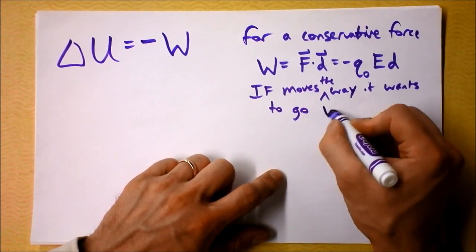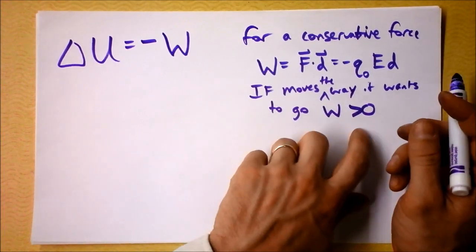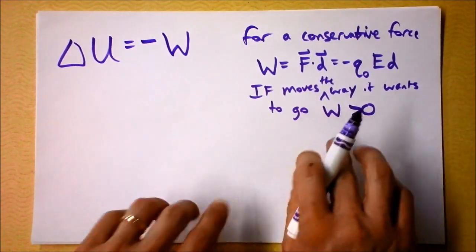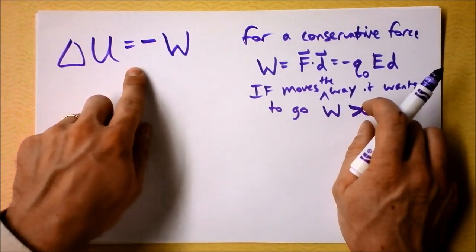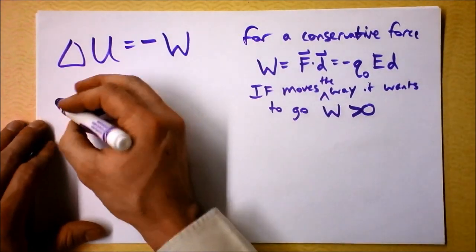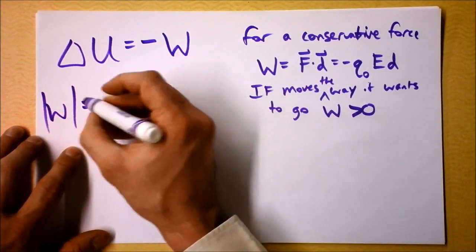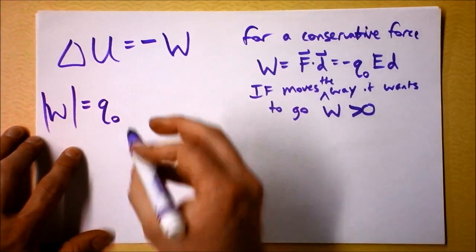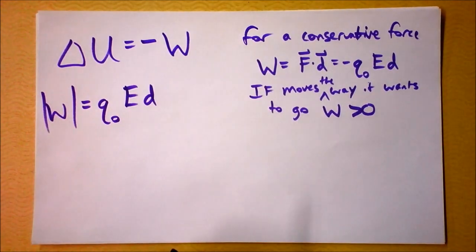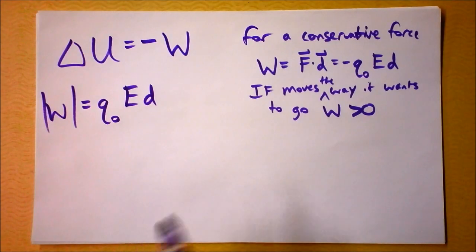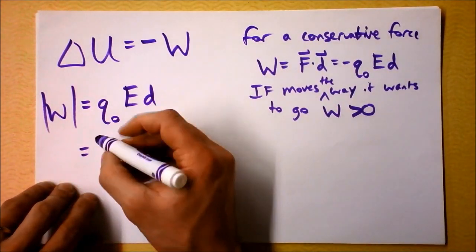The change in potential energy is negative if something moves the way it wants to go, because work is the opposite of the change in potential energy. Let's say you've got a charge, an electric field, and a distance — that gives you electric potential energy.